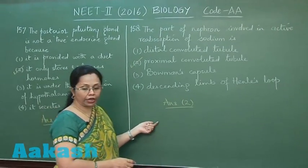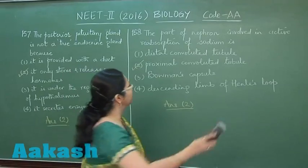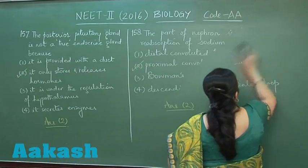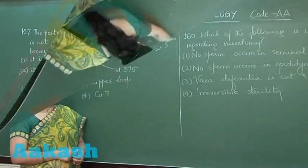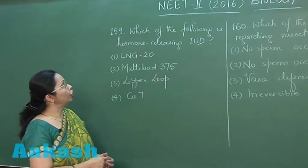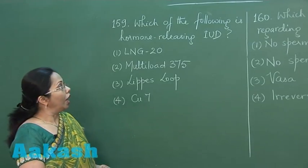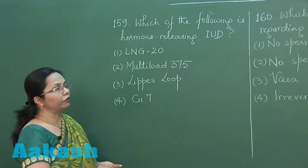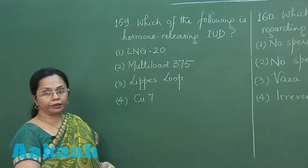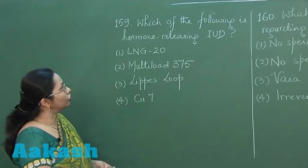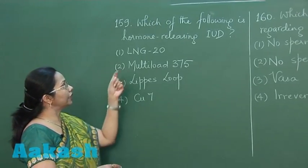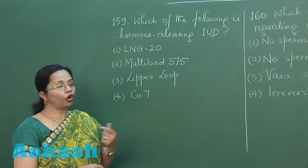To the next question, 159: Which of the following is hormone-releasing IUD? Now these all four of them are intrauterine contraceptive devices, but out of these, the hormone-releasing is LNG-20, which is releasing levonorgestrel, which is a synthetic progesterone.